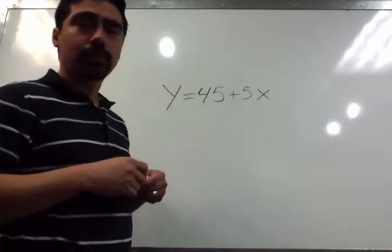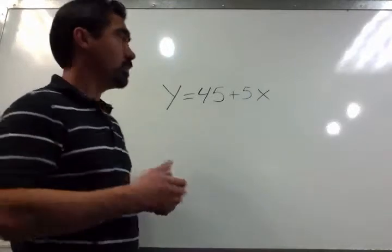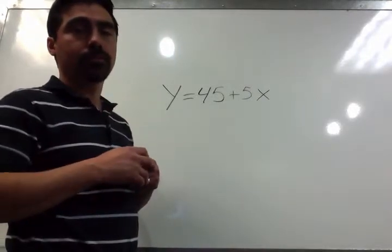And just a little hint there, anytime you have per or each, that's going to be your x. And so you have the equation, y equals 45 plus 5x.